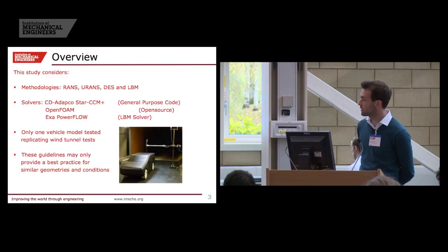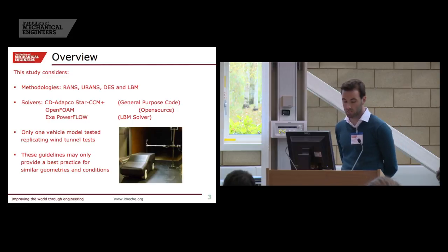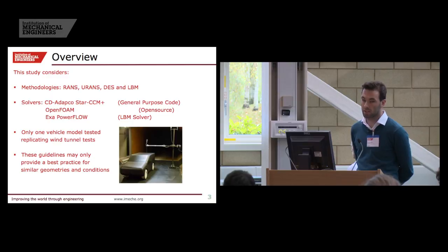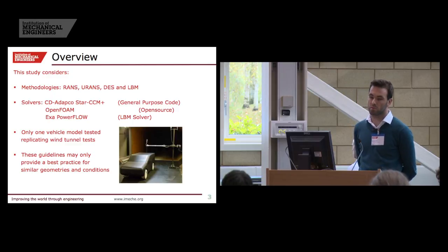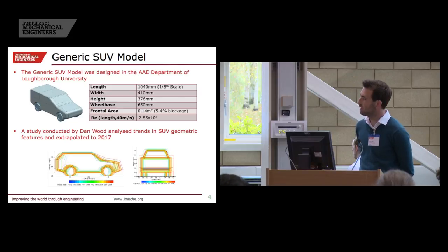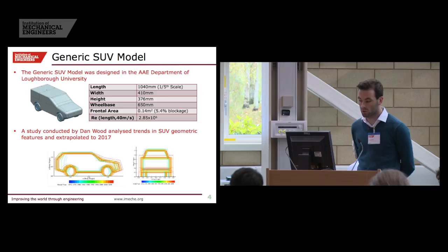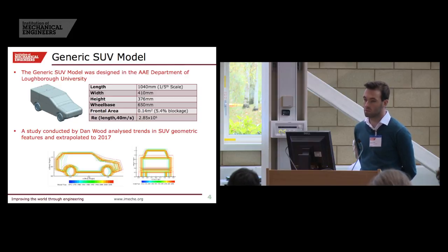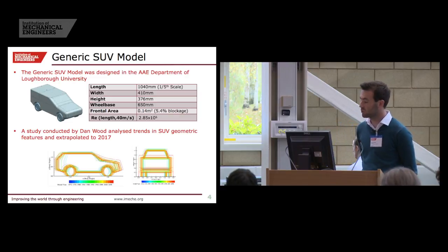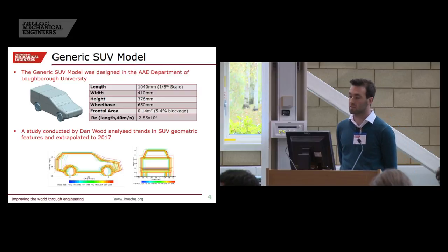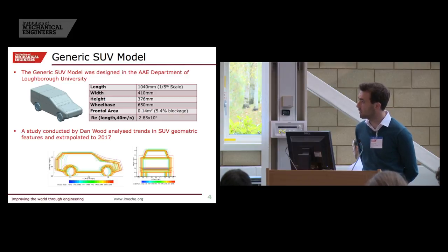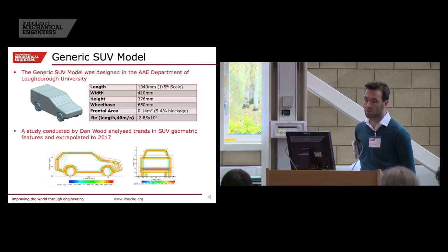Only one vehicle model was used during this study: the generic SUV, which can be seen in the wind tunnel on the right-hand side. It's got static wheels and a fixed ground, so the best practices obtained from this may only be suitable for similar geometries and conditions. The generic SUV model was designed in the Aeronautical and Automotive Engineering Department at Loughborough University. It was the result of a study by Dan Wood that analyzed trends in SUV geometric features over the last 40 years, and these trends were extrapolated to predict a generic 2017 model. Fifth scale, with 5.4% blockage in the test section of the tunnel.